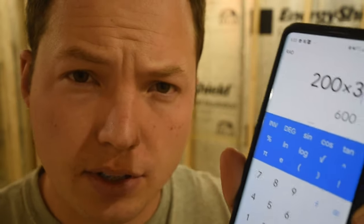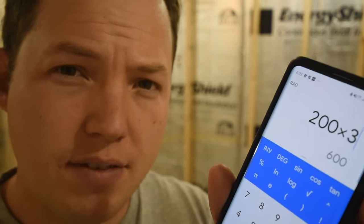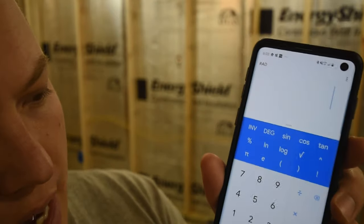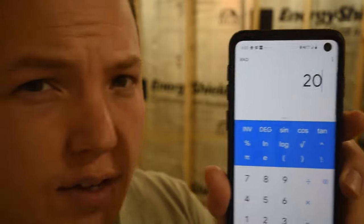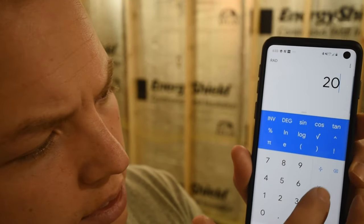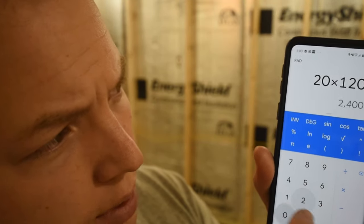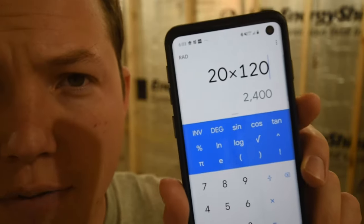Now if we look at our typical circuit, it's either going to be a 15 or a 20 amp circuit. If we assume that it's going to be a 20 amp circuit, we take 20 times the voltage of the circuit, which is 120 volts, so 20 times 120 gives us 2,400 watts.